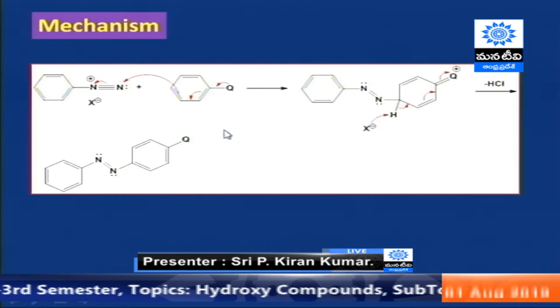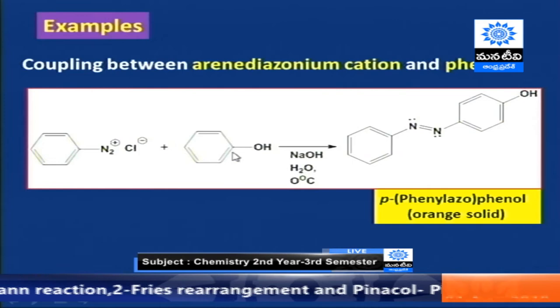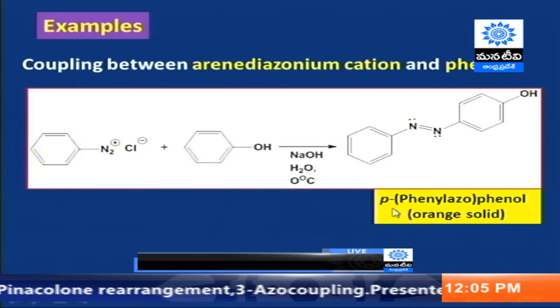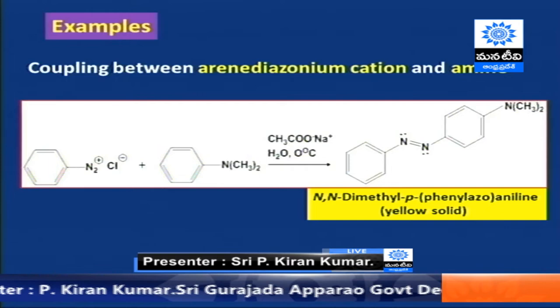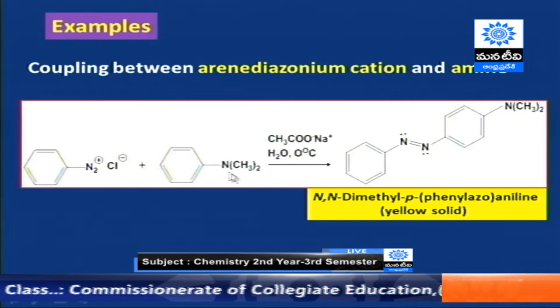When arene diazonium cation undergoes coupling with a phenol, we obtain an orange solid known as para-phenylazo phenol. When arene diazonium ion undergoes azo coupling reaction with a tertiary aryl amine, we obtain a yellow color solid. That means the color of the azo compound will depend on the nature of the aromatic systems in conjugation.